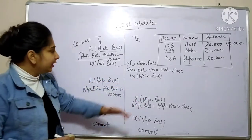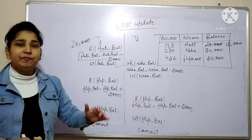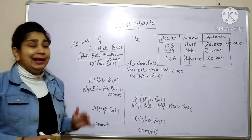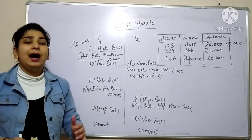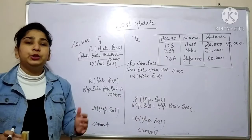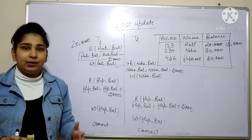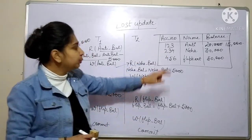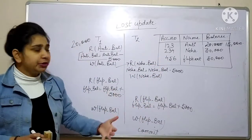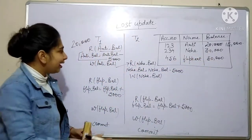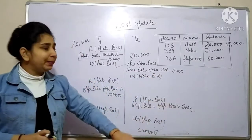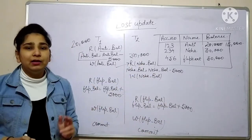In transaction T2, I want to transfer 5,000 rupees from Neha's account to Flipkart's account. Both transactions are happening simultaneously at the same point of time. I want to deduct Rs 5,000 from Neha's account, so I fetch her balance value: 30,000. I then deduct 5,000 rupees from 30,000, and this operation is done in the main memory.